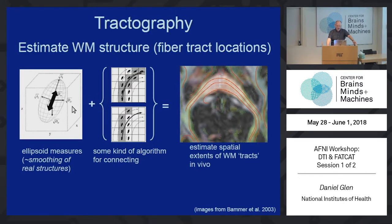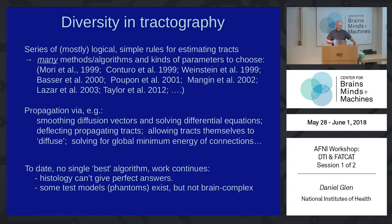This is a diagram of how tractography works. You've got your ellipsoid at every voxel, then you make a map of all the ellipsoids. You use some sort of algorithm to connect the voxels together and come up with a map that looks like this. There have been lots and lots of methods, and they work in varying degrees. Even histology can't give us the answers because histology is destructive and you still can't see all the fibers and connect them to each other.